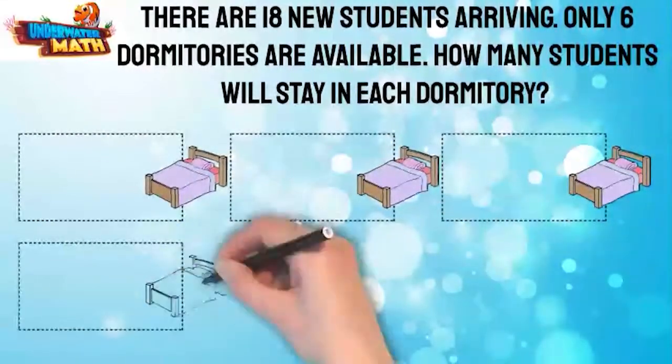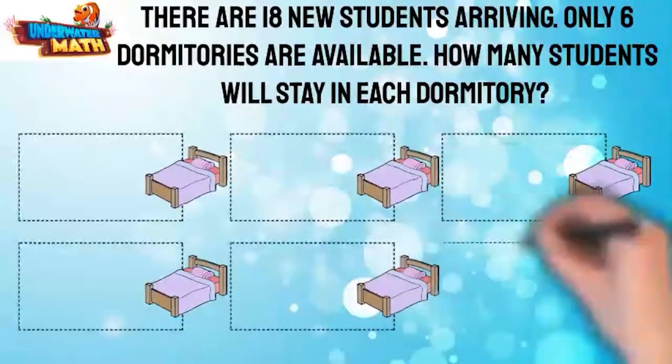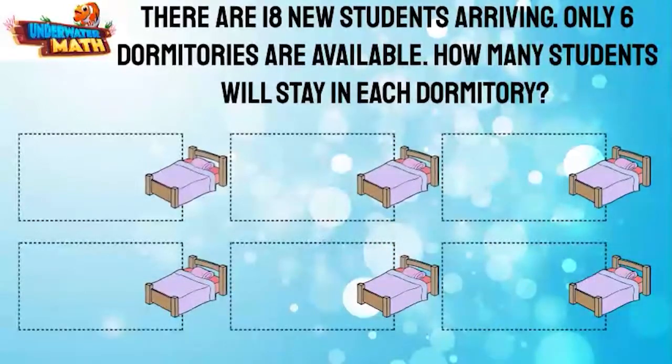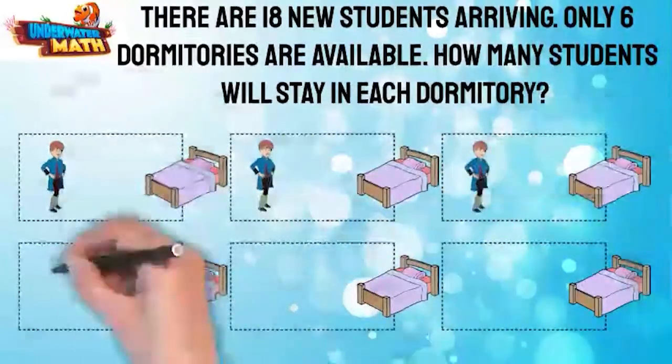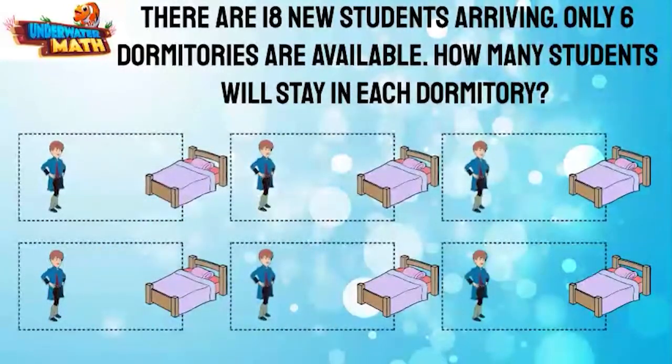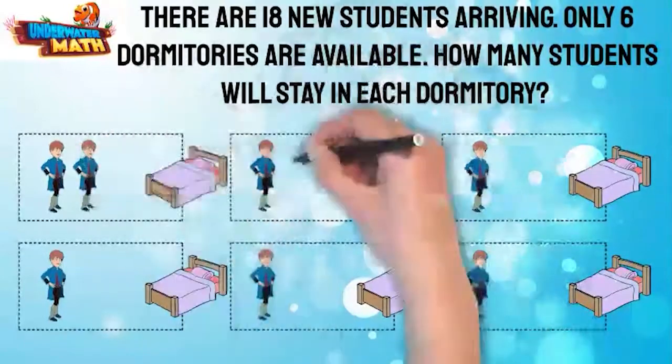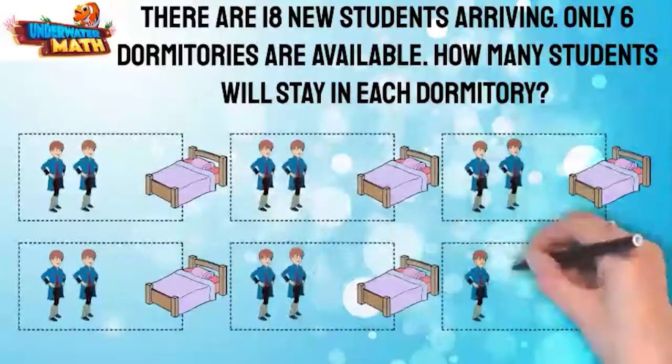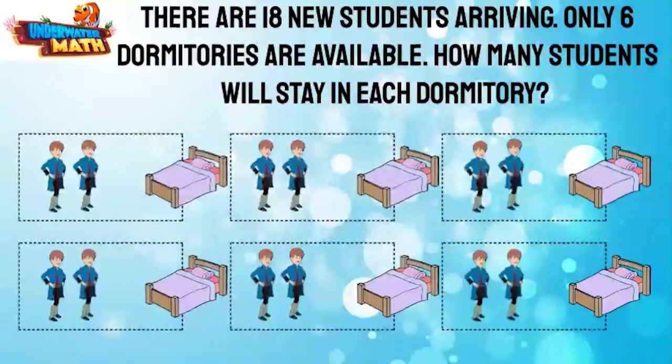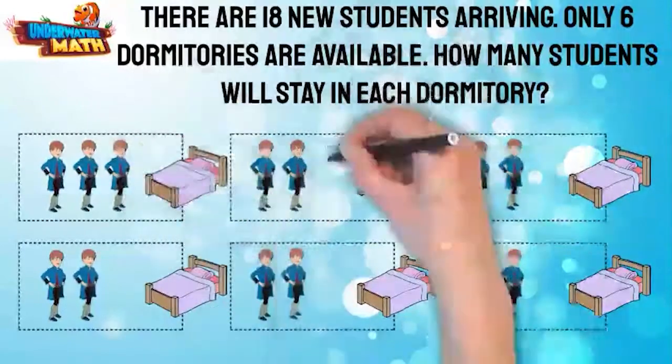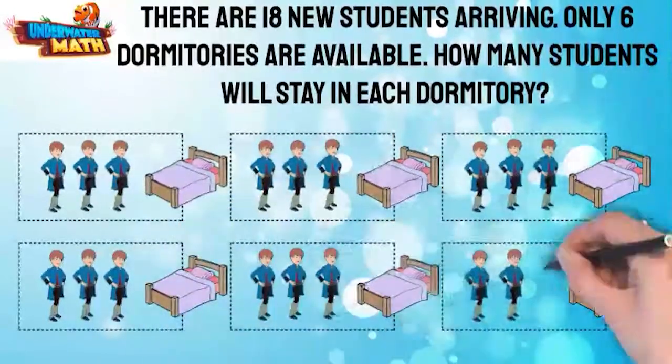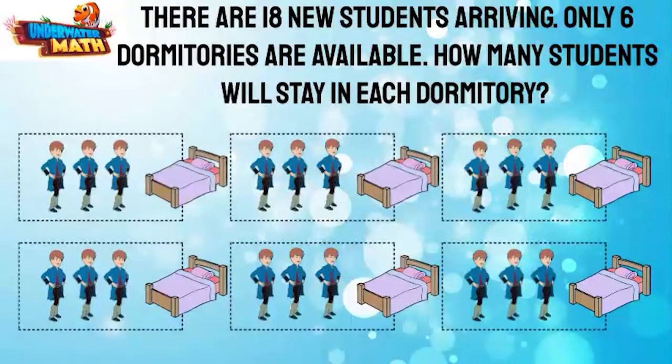First, we have a model of six dormitories. We need to figure out how many students can go into each. So let's just put one student into each dormitory. It looks like we still have several students left. We'll try one more student into each dormitory. There are still a few students left, so we'll try one more student into each dormitory. And that should settle it. Perfect. There are three students in each dormitory.